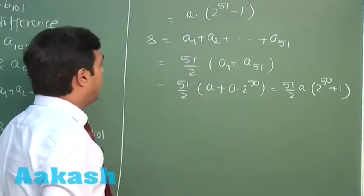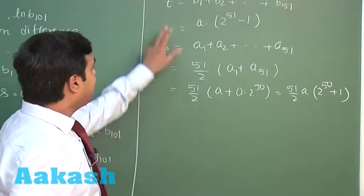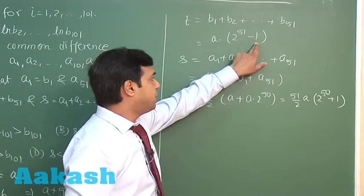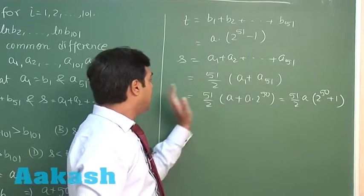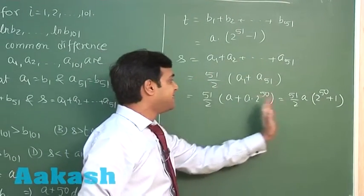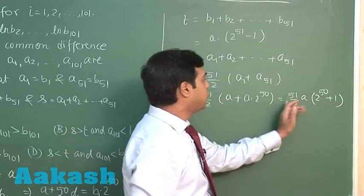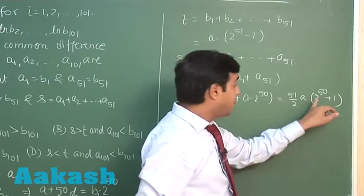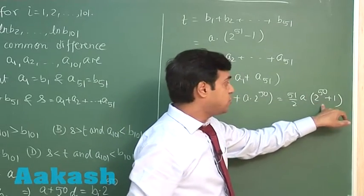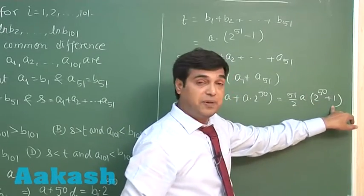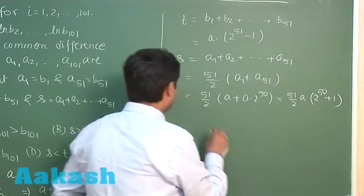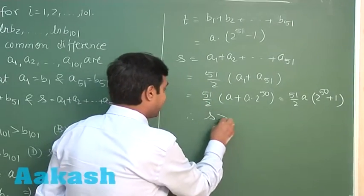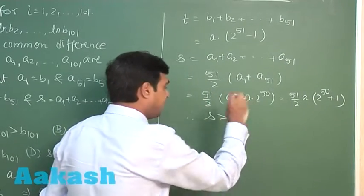We can now see that T = a × (2^51 − 1) while S = a × (51/2) × (2^50 + 1). Clearly S is greater than T.